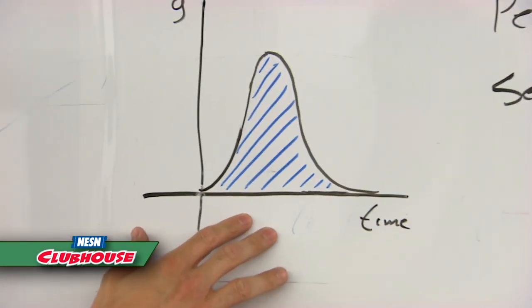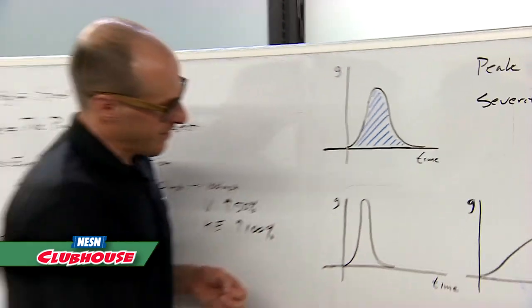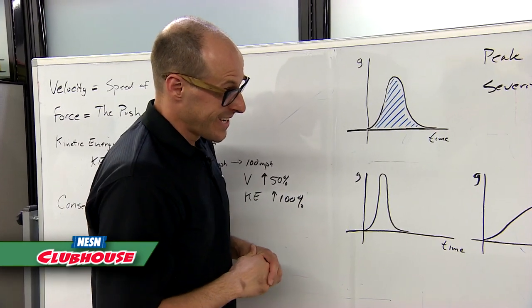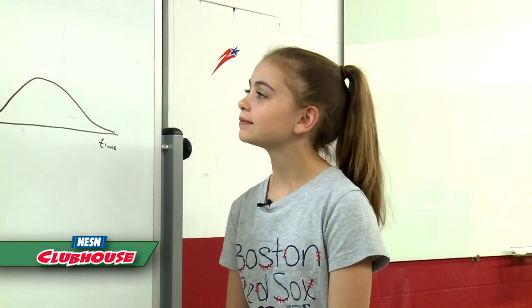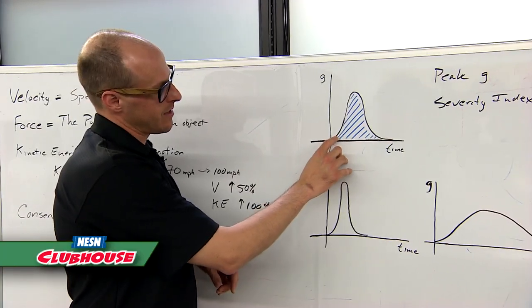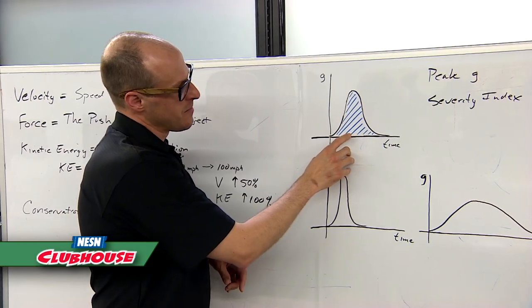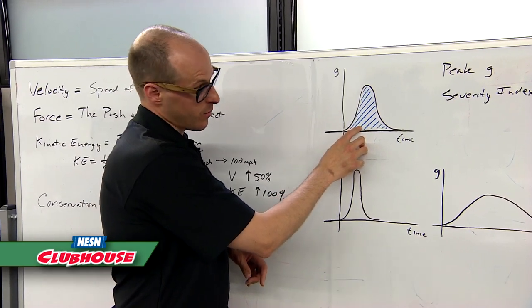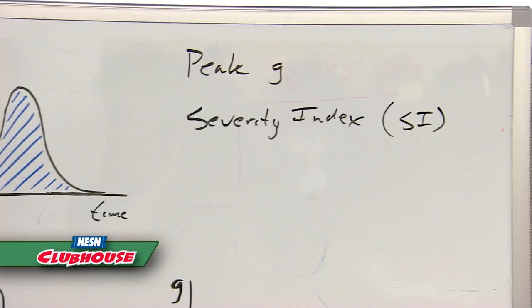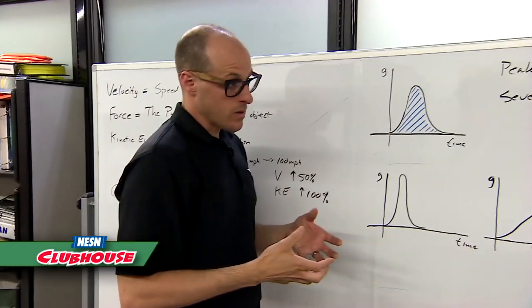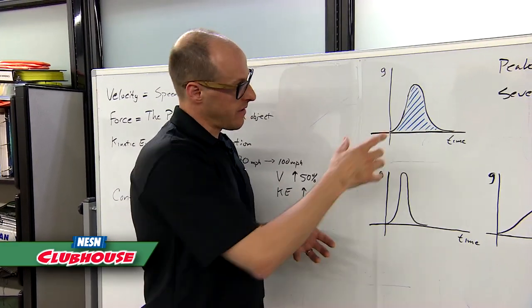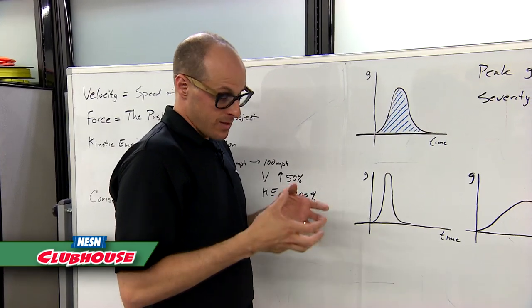What that area under the curve means - have you had any calculus, done integrals at all? Not yet. Something to look forward to is calculus because that'll tell you how you can calculate the area under this squiggly curve, and that's called the severity index or we abbreviate it as SI. Severity index, what it means in the real world, is the total energy of that impact. That's important again because conservation of energy is really important.